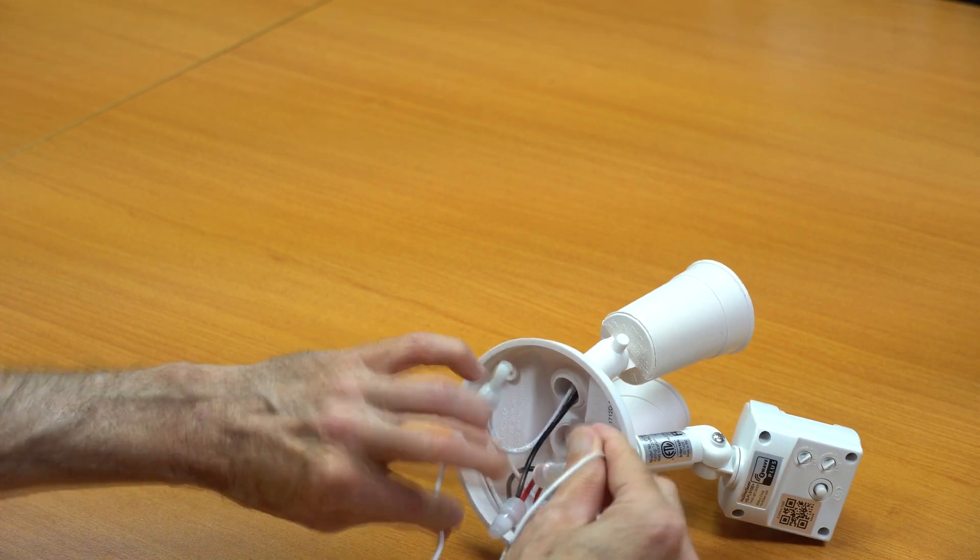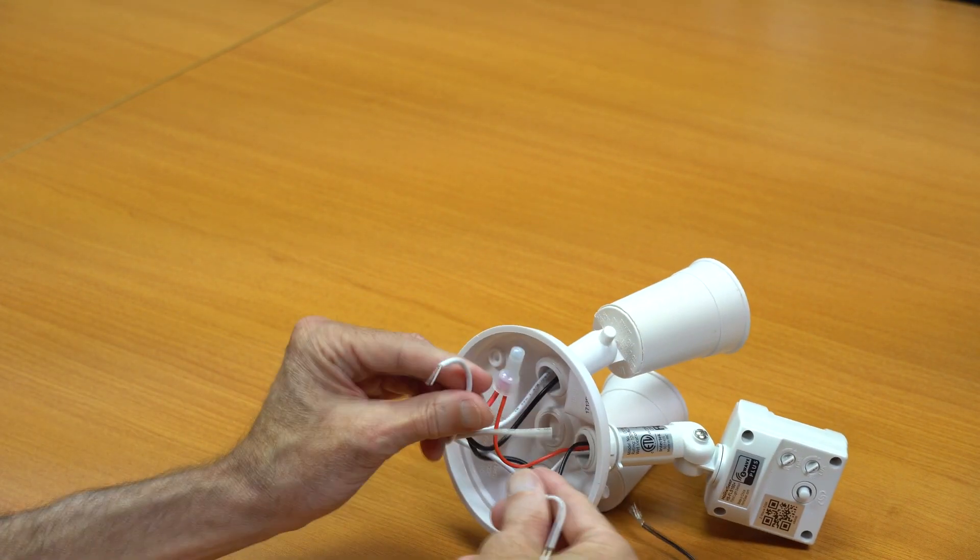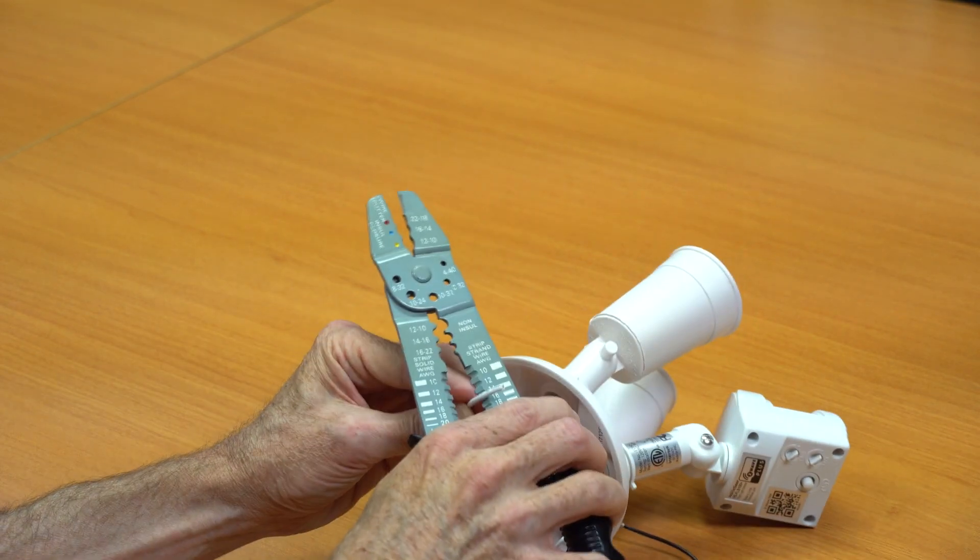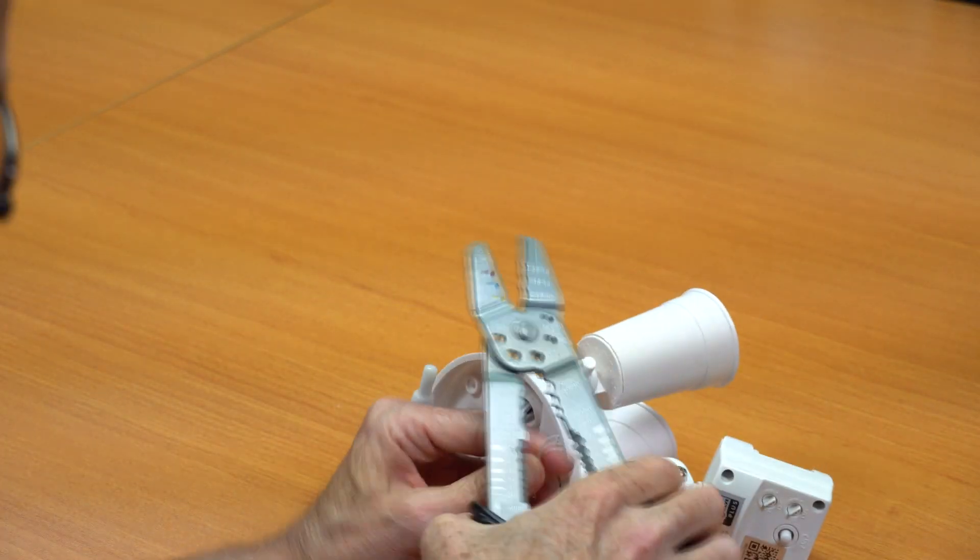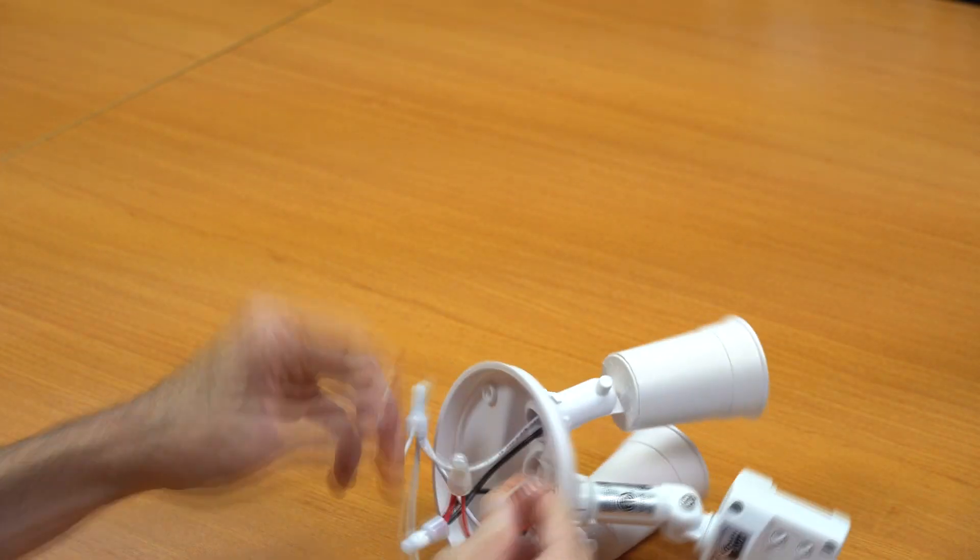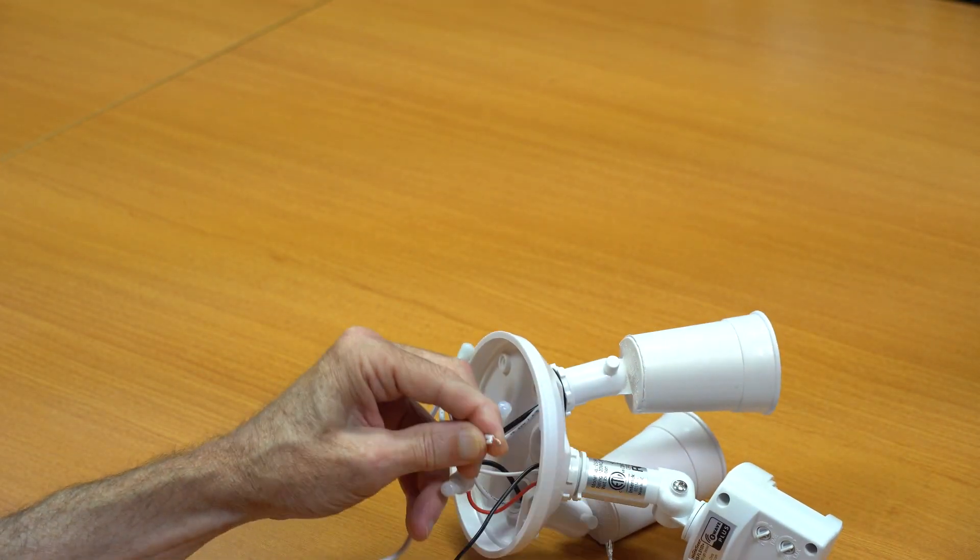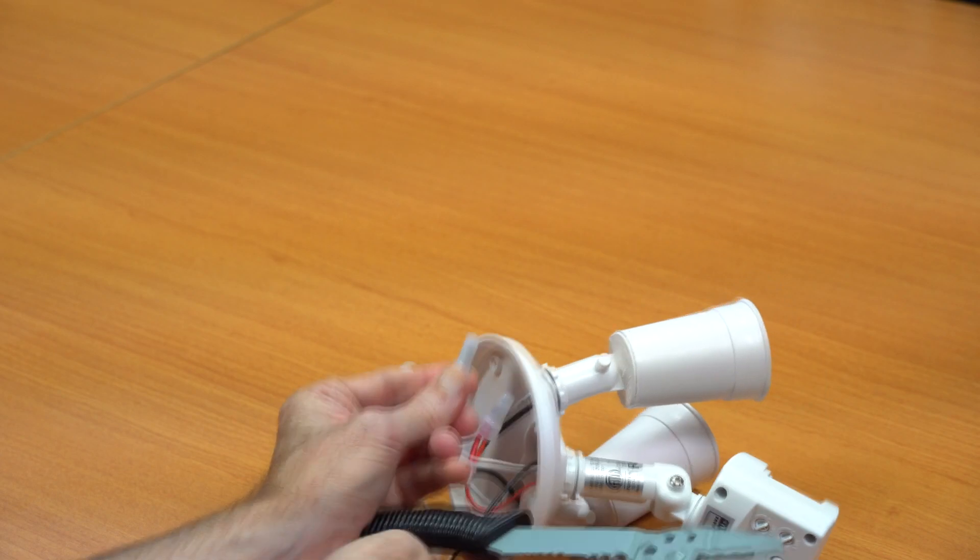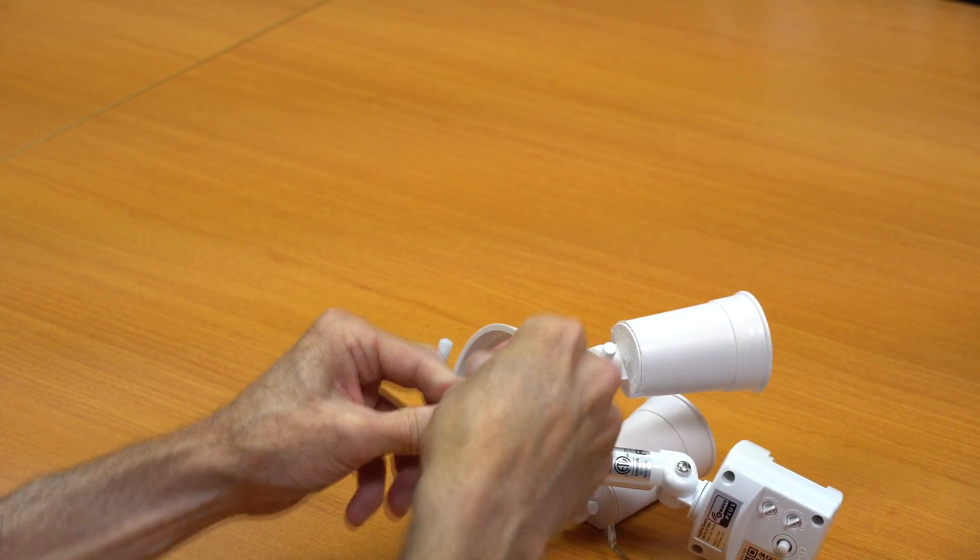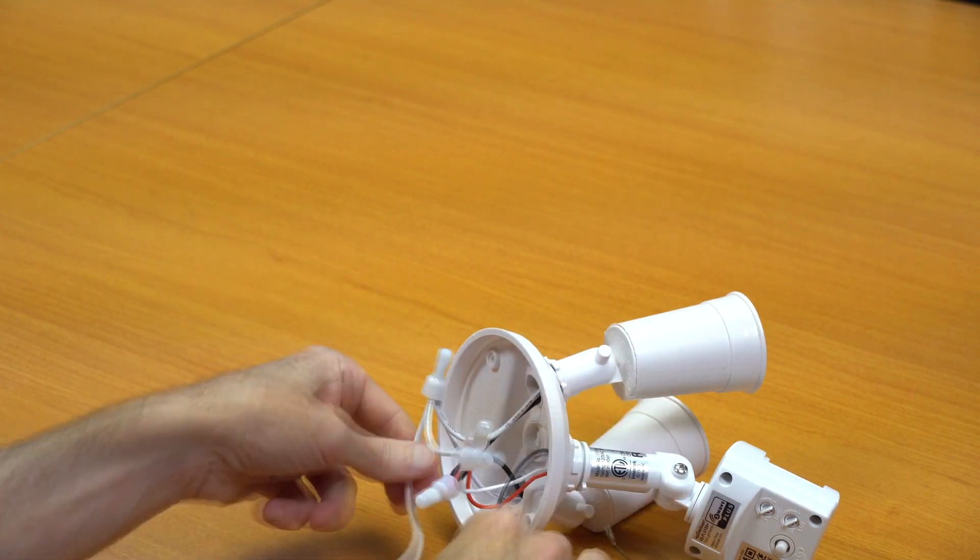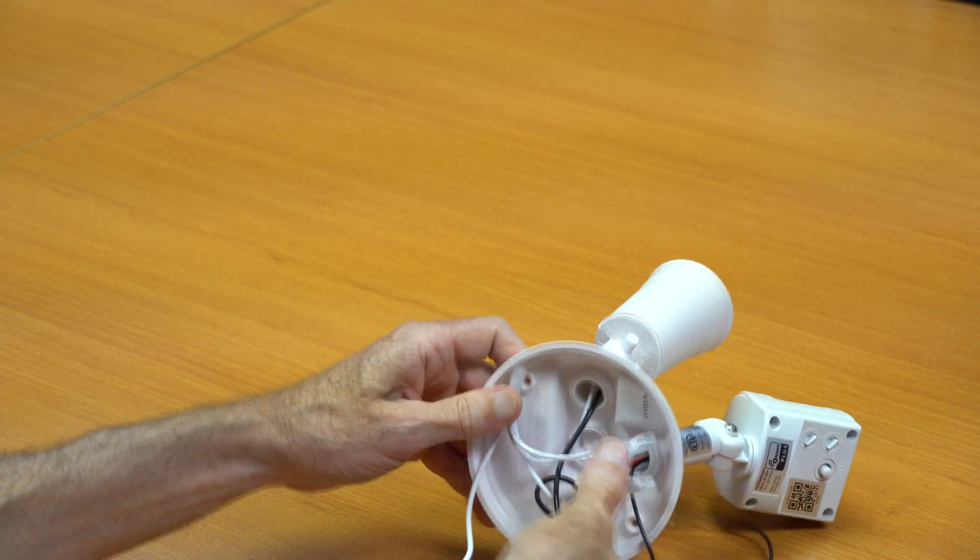I'm going to repeat that process now for the white wires. Okay, well that completes the fixture wiring. The next step will be to mount it back to your house.